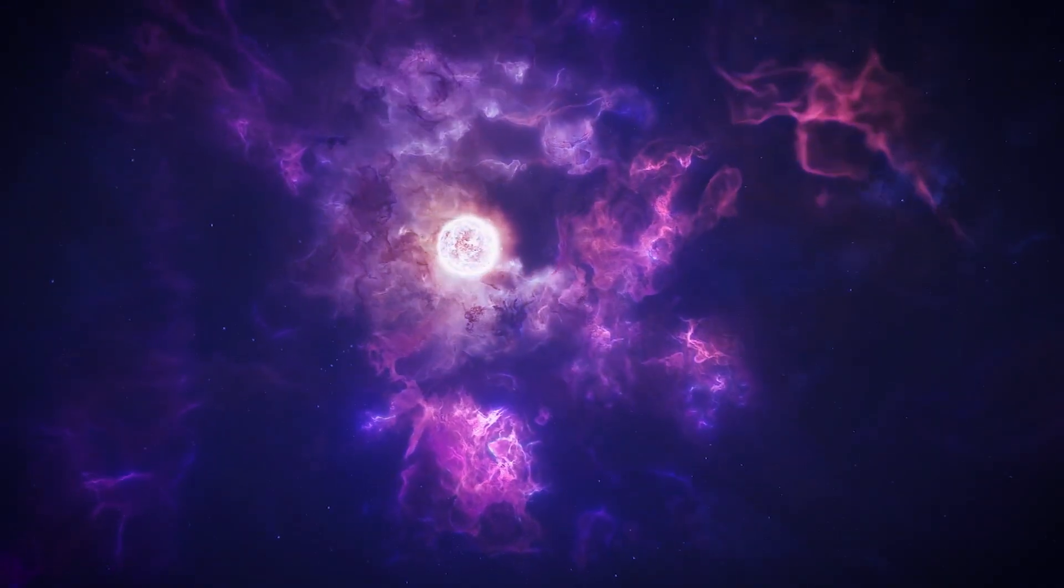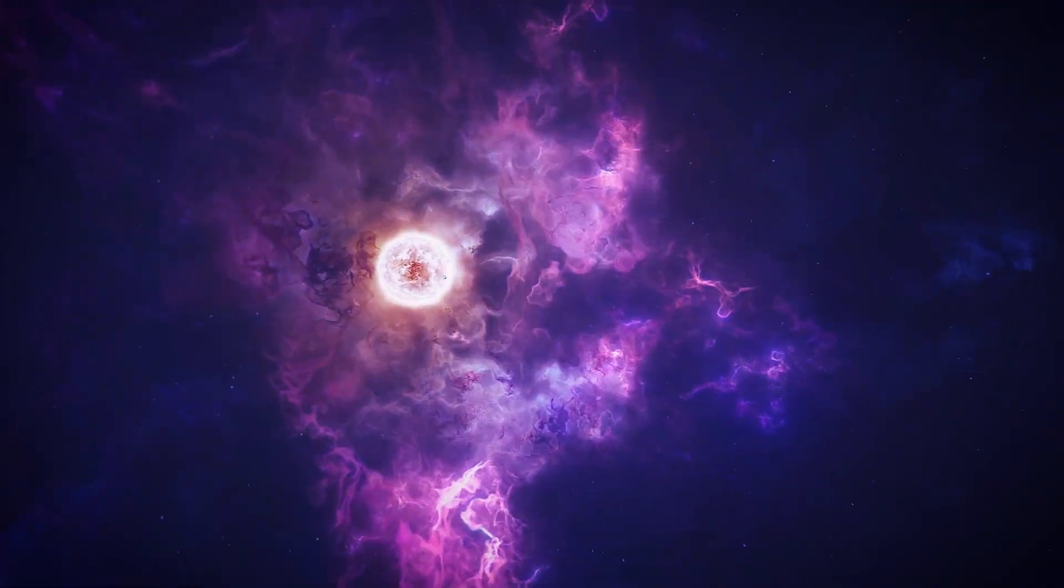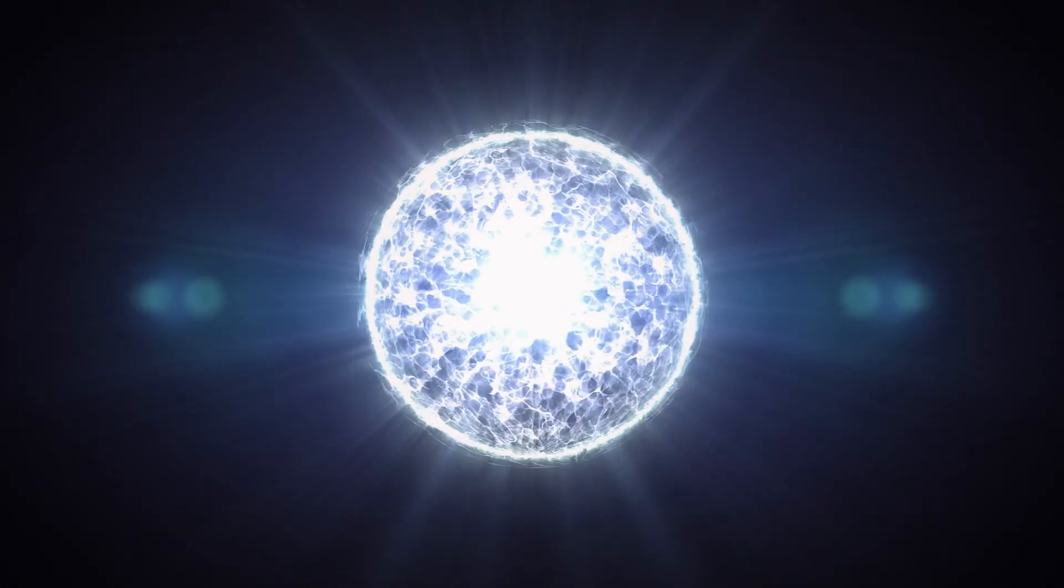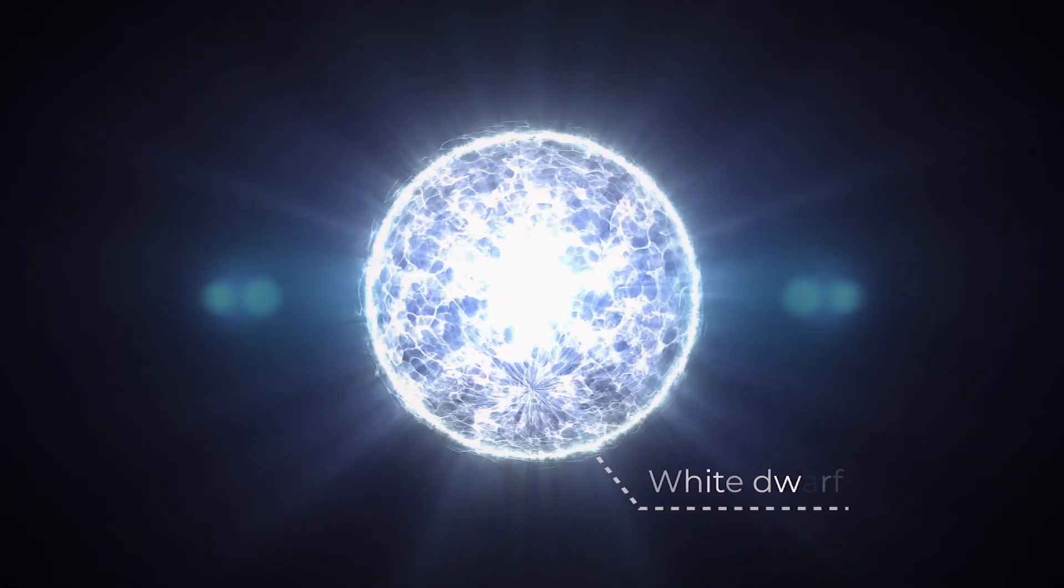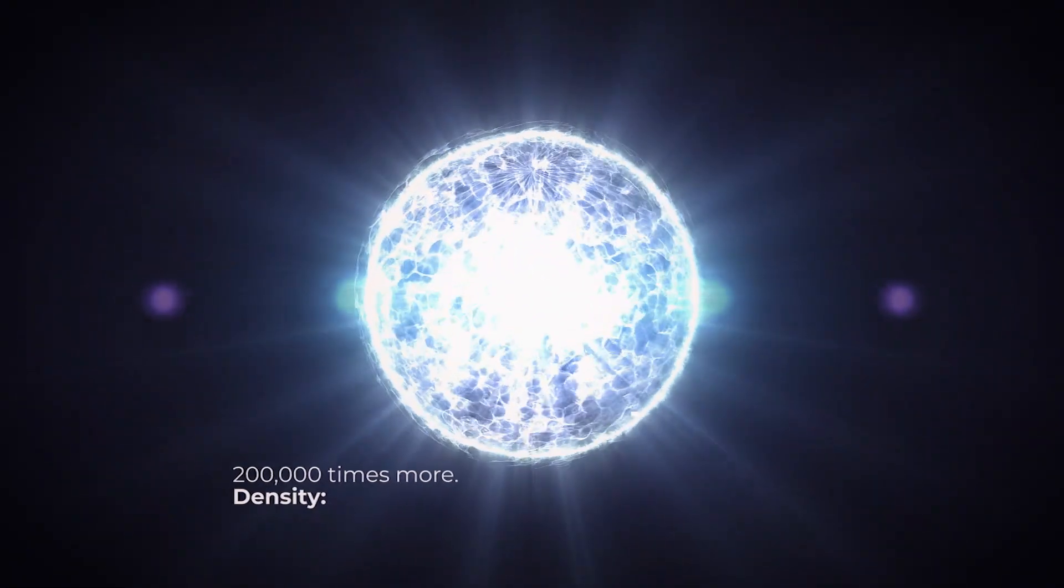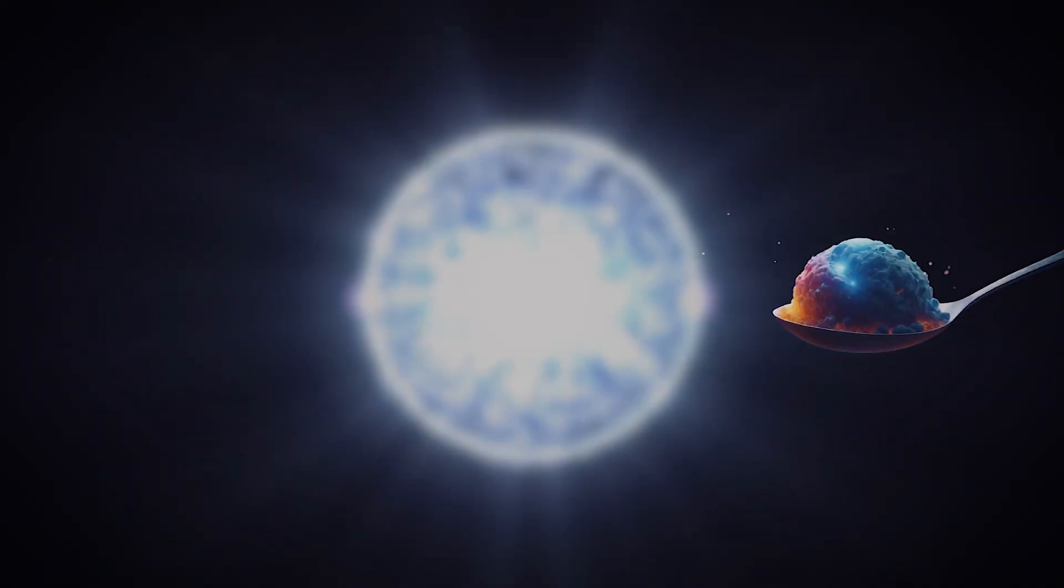The sun will shed its outer layers, becoming a planetary nebula, a glowing cocoon of gas. The core will remain at the center, a white dwarf, about the size of the Earth, but 200,000 times denser. A spoonful of matter from such an object weighs more than an airplane.